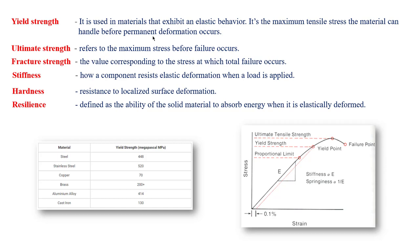When it comes to ultimate strength, this refers to the maximum stress a material attains before failure occurs. This is the ultimate strength value. After this point it will fail. Up to the ultimate strength, the material is in the plastic region — remember the elastic region comes before it.